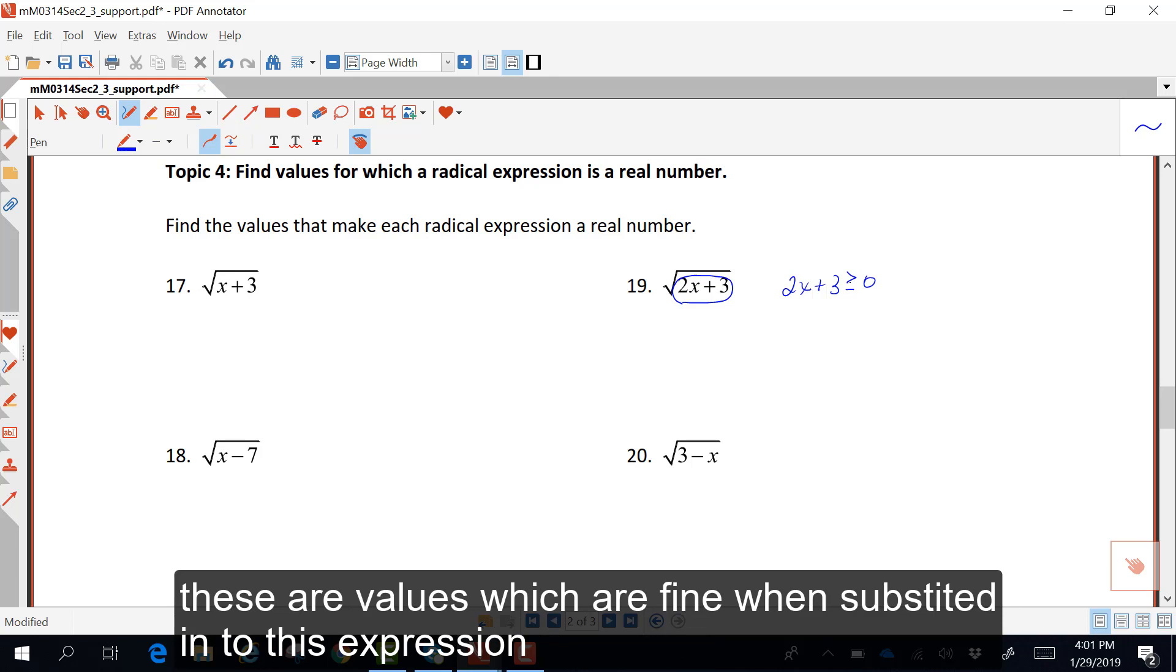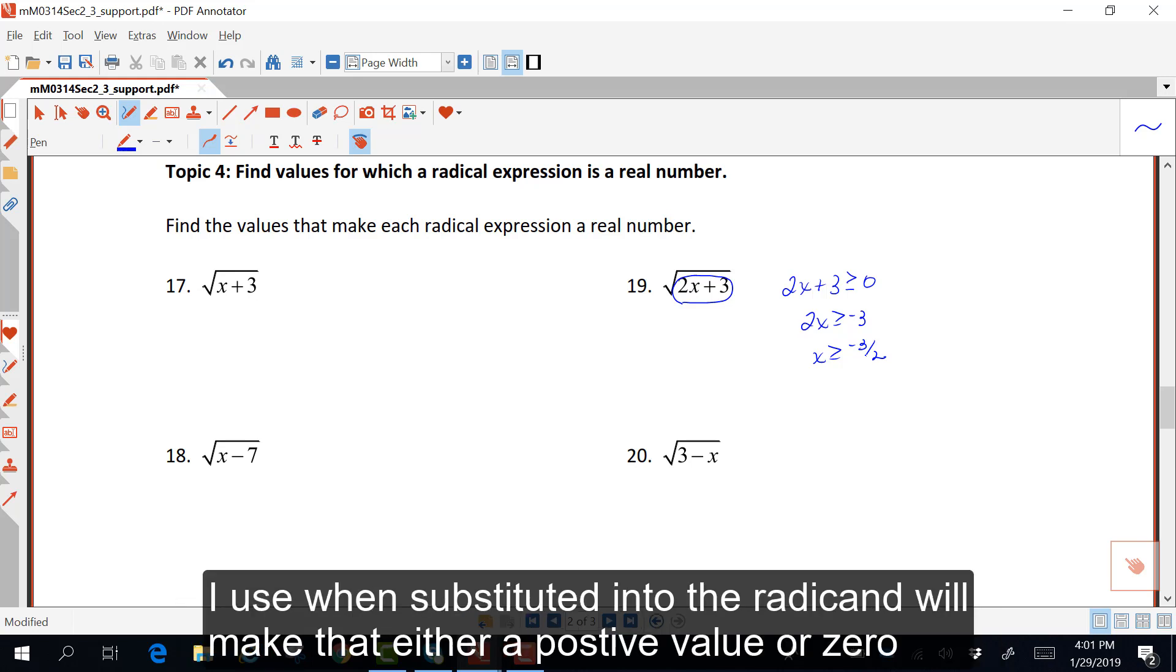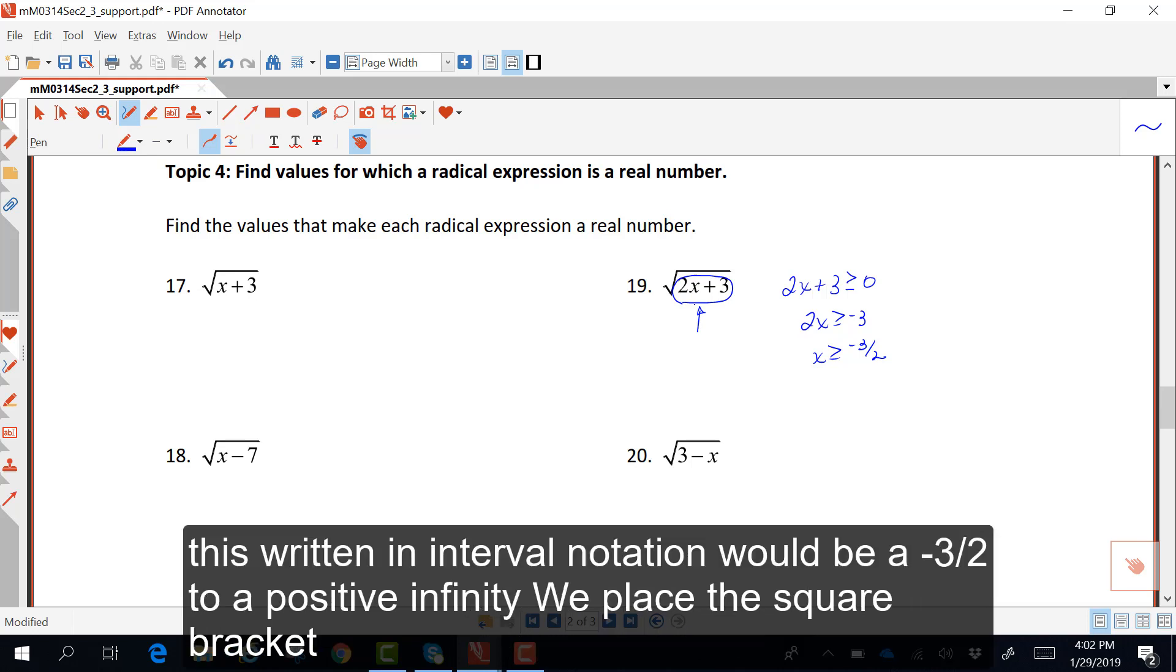These are values which are fine when substituted into this expression. If I subtract 3 off of each side of the inequality, and then divide by 2, I get x values greater than or equal to negative 3 halves. Those values, when substituted into the radicand, will make that either a positive value or 0.